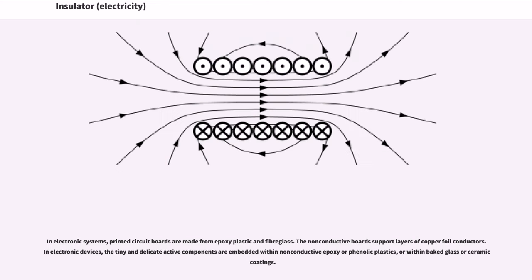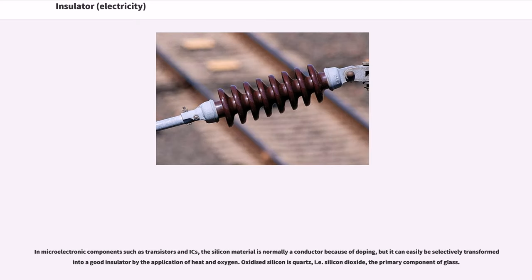In electronic systems, printed circuit boards are made from epoxy plastic and fiberglass. The non-conductive boards support layers of copper foil conductors. In electronic devices, the tiny and delicate active components are embedded within non-conductive epoxy or phenolic plastics, or within baked glass or ceramic coatings. In microelectronic components such as transistors and ICs, the silicon material is normally a conductor because of doping, but it can easily be selectively transformed into a good insulator by the application of heat and oxygen.